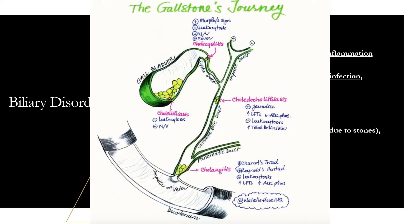Let's take a quick look at a diagram — it breaks down where the stones are commonly seen with each individual disorder. For cholelithiasis, the stones are just sitting in the gallbladder. For cholecystitis, they're normally in the cystic duct. Choledocholithiasis is in the common bile duct. And cholangitis is more towards the ampulla of Vater, blocking off the entire common bile duct.